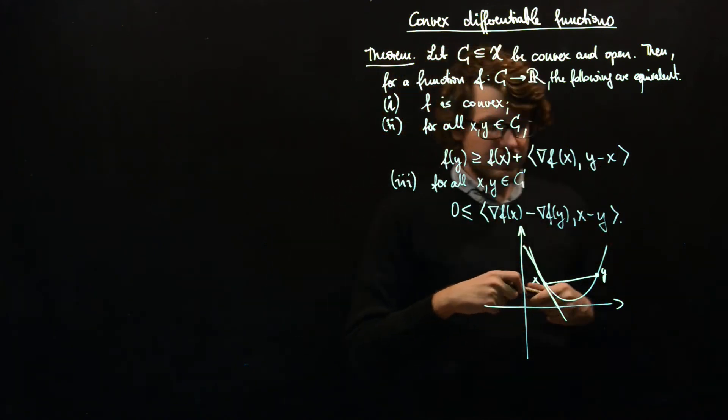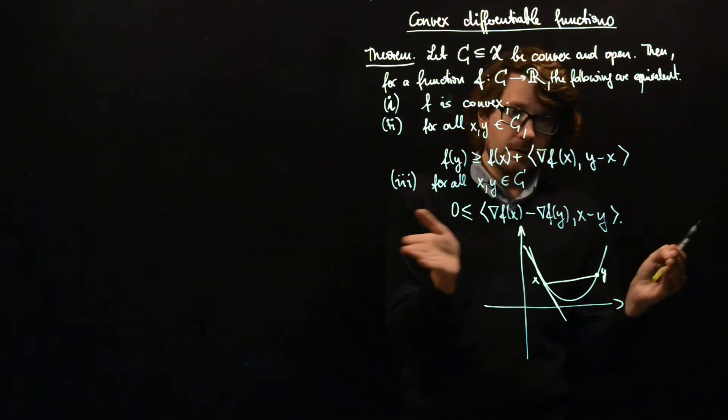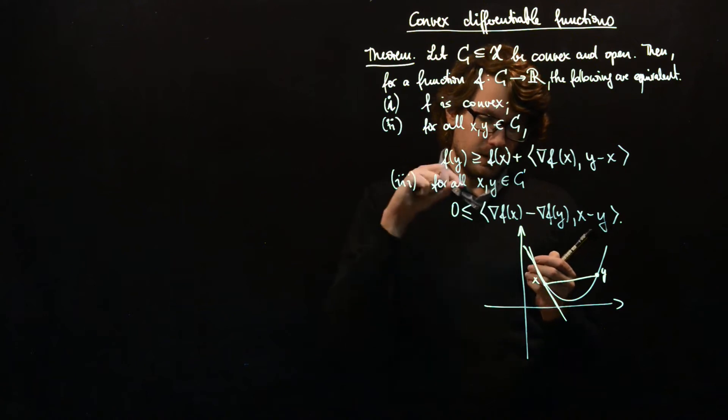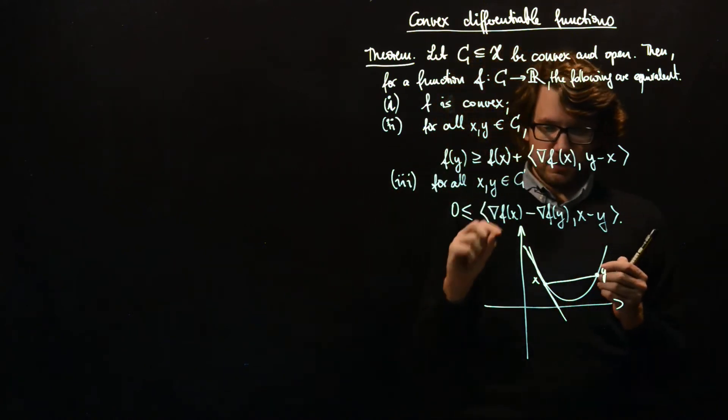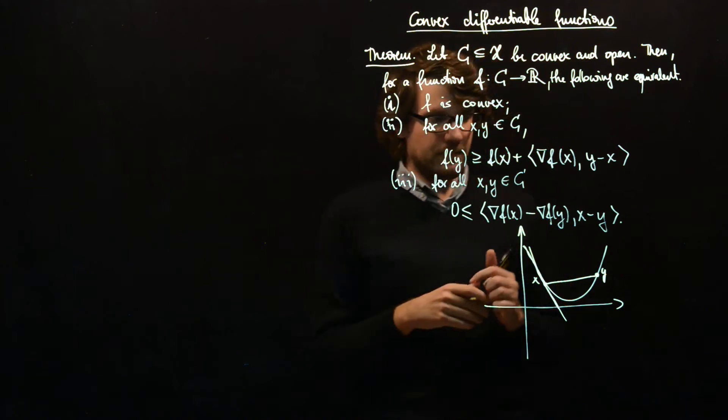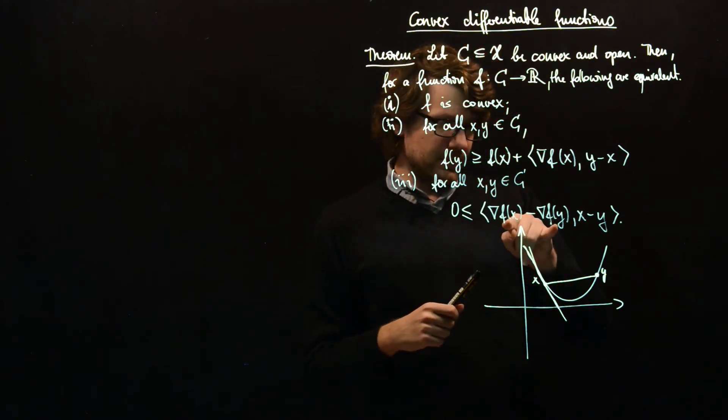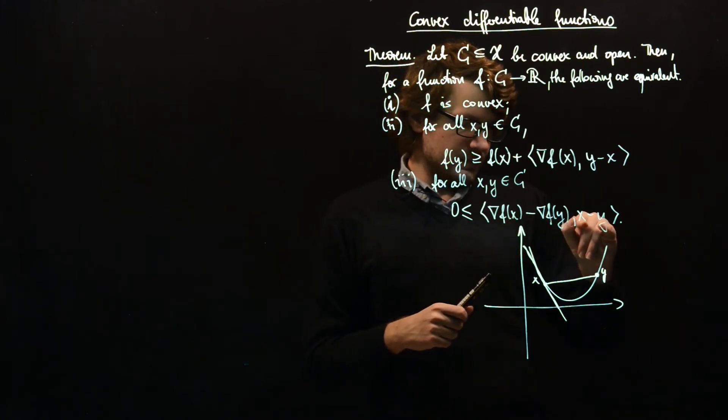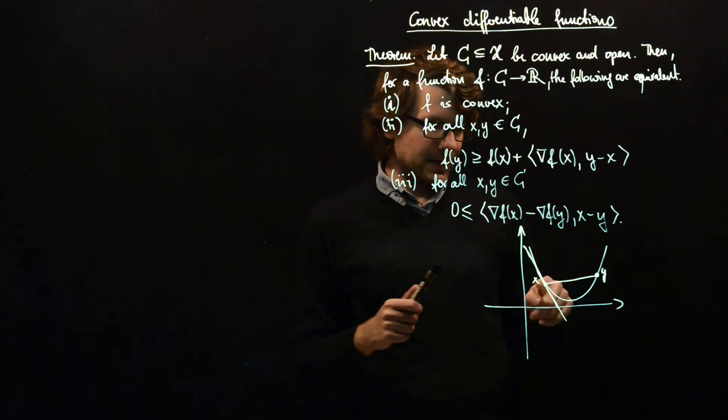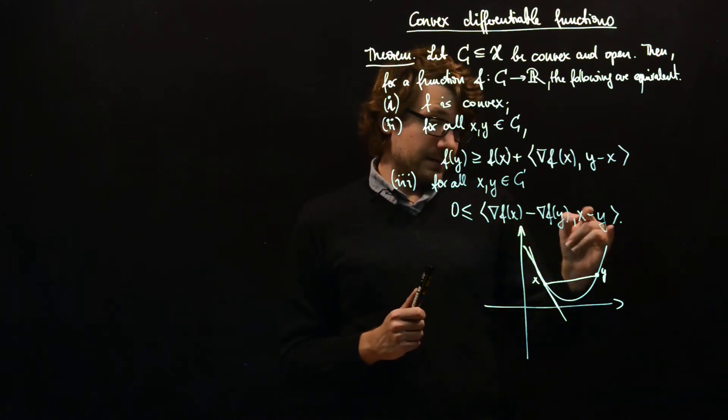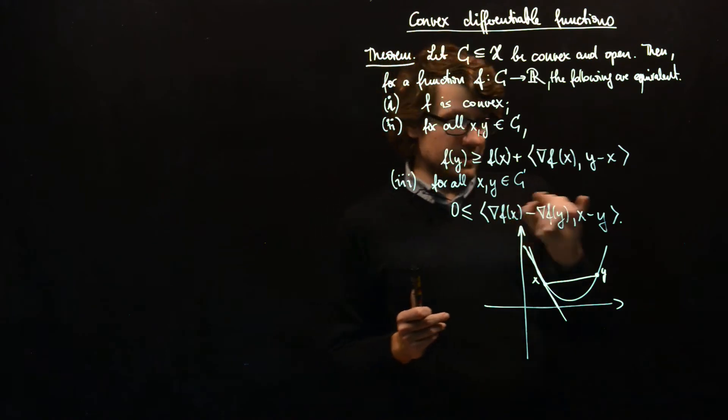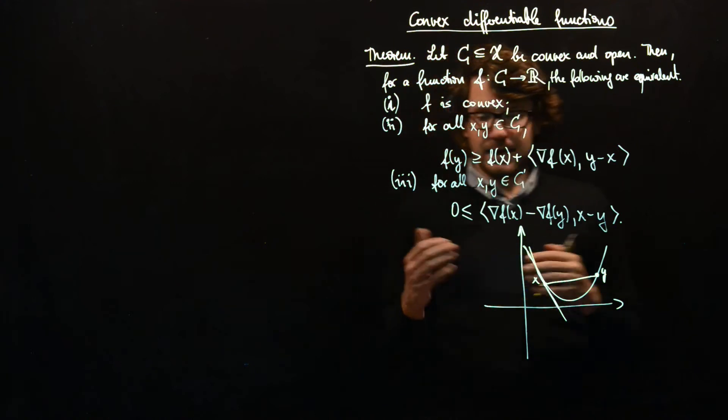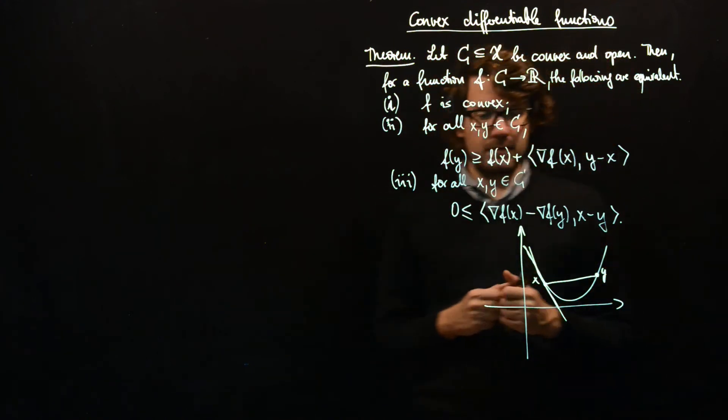And the third point is a bit more abstract and this corresponds to the one-dimensional notion that whenever you have a convex function then the first derivative is monotonically increasing or non-decreasing. This means whenever you take the difference between two gradients and the difference between these two points where the gradients are taken, then if you multiply them in one dimension this corresponds to multiplication, then you always get a non-negative number.